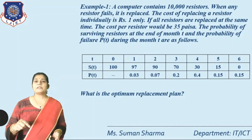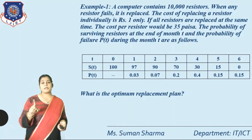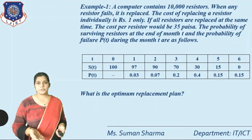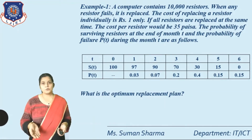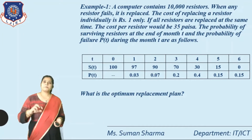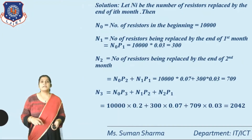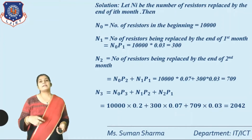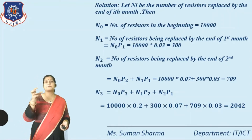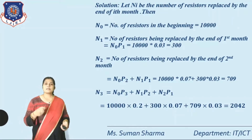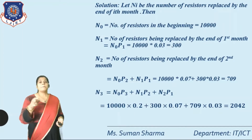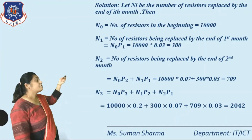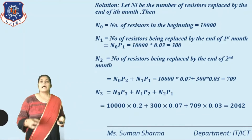First check: add all probabilities — 0.03 + 0.07 + 0.2 + 0.4 + 0.15 + 0.15 = 1. The solution method: let capital N_i be the number of registers replaced by the end of the ith month, for i = 0, 1, 2, 3, 4, 5, 6.